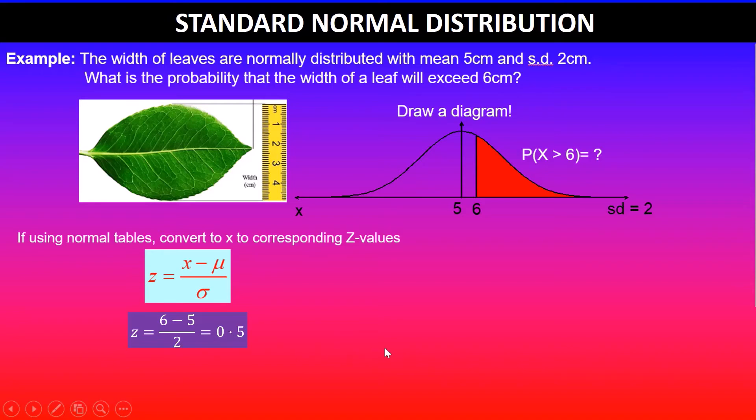This gives a z value of 0.5. Now our x value has changed to a z value. The mean of 5 becomes 0 for the standard normal distribution, and the x value of 6 corresponds to z = 0.5, which we just calculated.